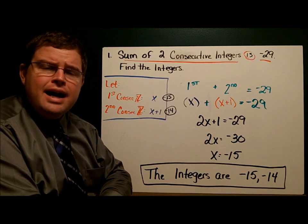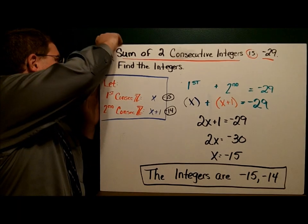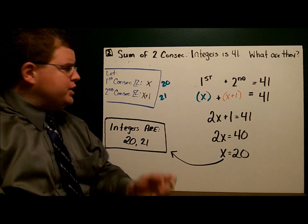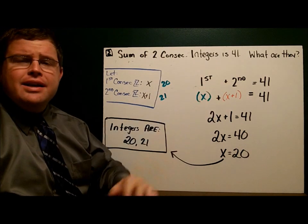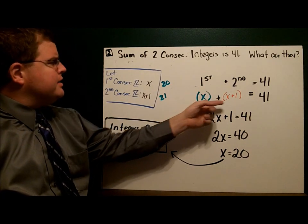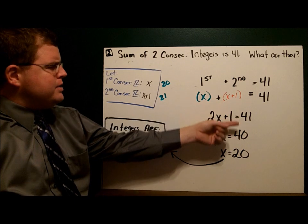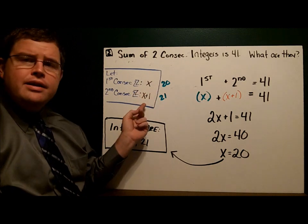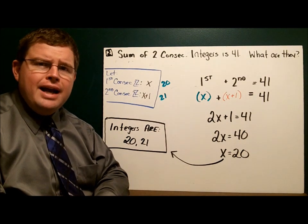Example number two is just like this. I'd like for you to pause the video here, use the first example as a guide, and see how you do. On example two, the sum of two consecutive integers is 41. Our first integer is x, our second integer is x plus one. The first plus the second equals 41, so x plus x plus one equals 41. Combining like terms and solving, x equals 20. The first one is 20, the second one is x plus one, so it must be 21. My integers are 20 and 21.